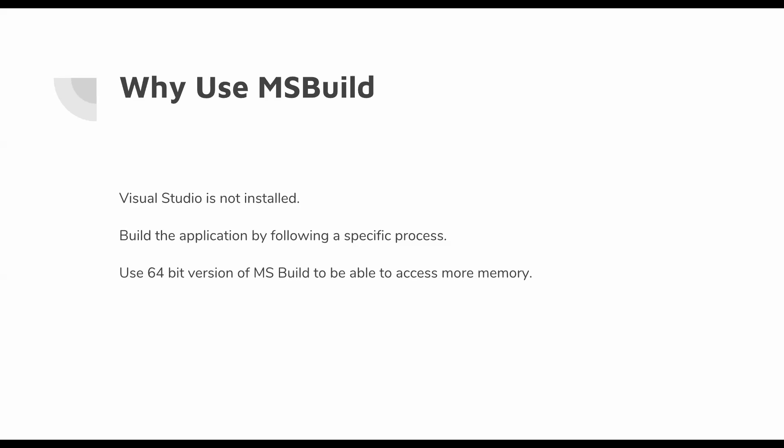Another reason is that we can use MSBuild to build the application using the 64-bit version of the MSBuild executable if we want to access more memory. There could be certain cases where this is a very valid reason to use MSBuild instead of the normal 32-bit version.